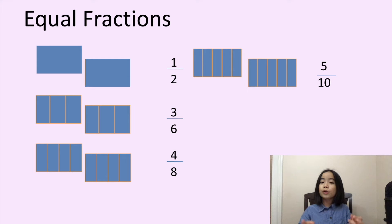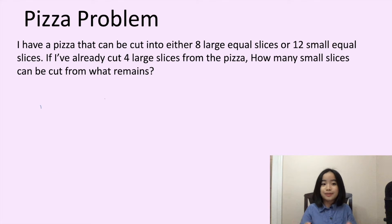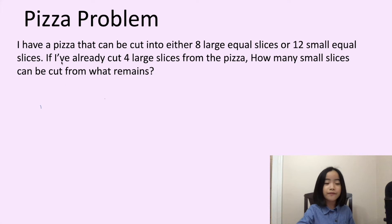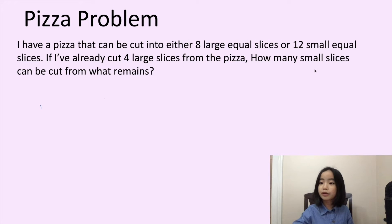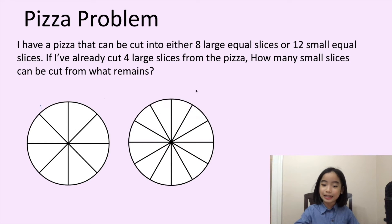But, of course, there are more equivalent fractions — I'll leave that to you to figure out. Now, let's look at a pizza problem. I have a pizza that can be cut into either eight large equal slices or twelve small equal slices. If I've already cut four large slices from the pizza, how many small slices can be cut from what remains? Here is a pizza cut into eight large equal slices. And here is a pizza cut into twelve small equal slices.